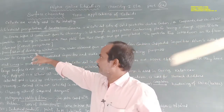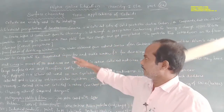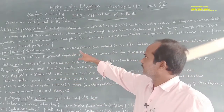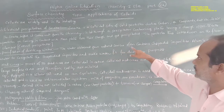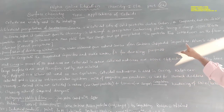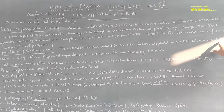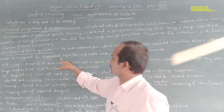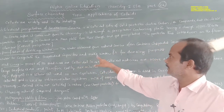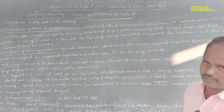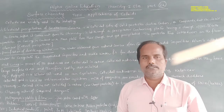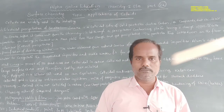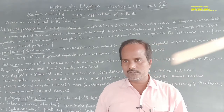The next application is purification of drinking water. Water obtained from natural sources such as rivers often contains suspended impurities. Alum is added to such water to coagulate the suspended impurities and make the water fit for drinking purpose.